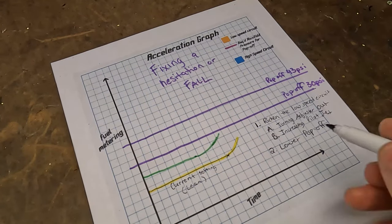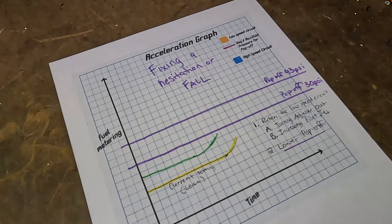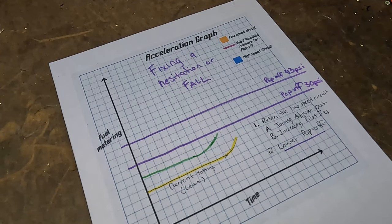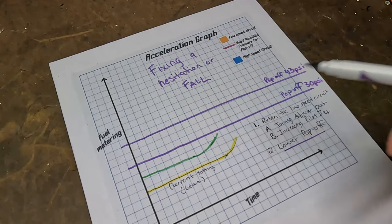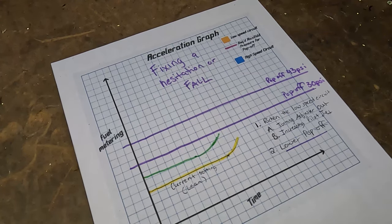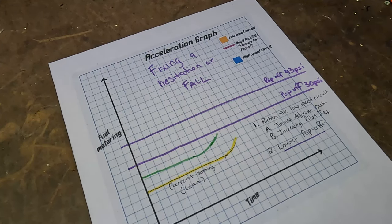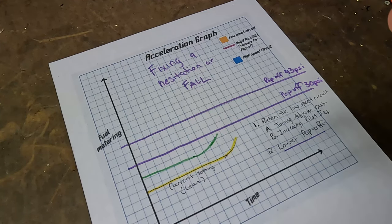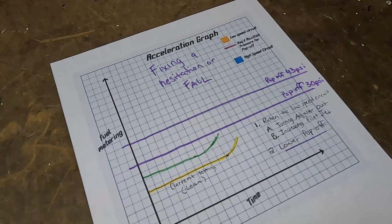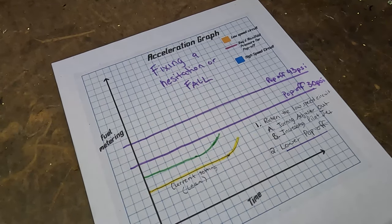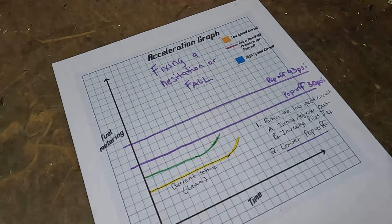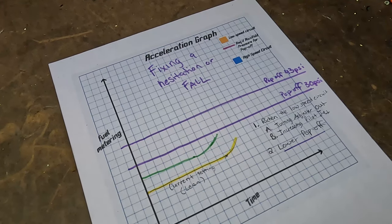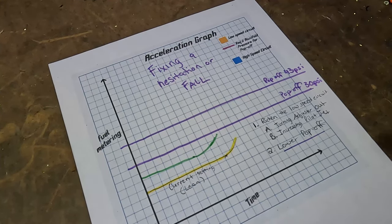Another thing that you can do is lower pop-off pressure. These skis came from the manufacturer with higher pop-offs because they needed to meet the EPA's fuel emission requirements. If you're experiencing a hesitation or fall and you want to get closer to the low end circuit, you can lower the pop-off by adjusting the springs in the carburetors. Just make sure that if you have dual carbs, your pop-off pressures are within one to two psi of each other. The one thing you do want to watch out for when lowering your pop-off is not having a too low pop-off. If your pop-off pressure is too low, you are going to experience a bog or a slow and sluggish acceleration like we talked about earlier.